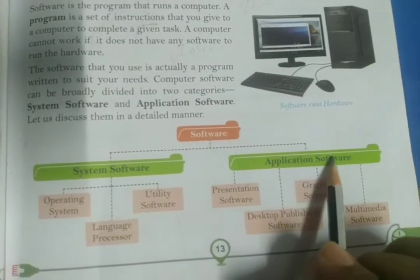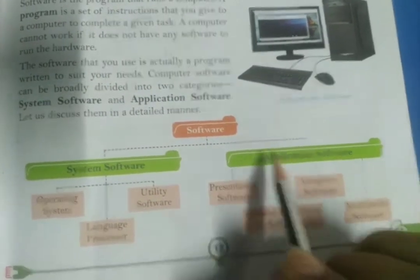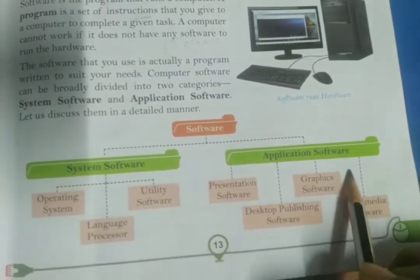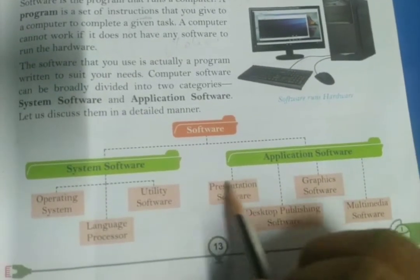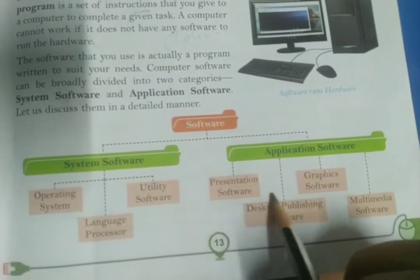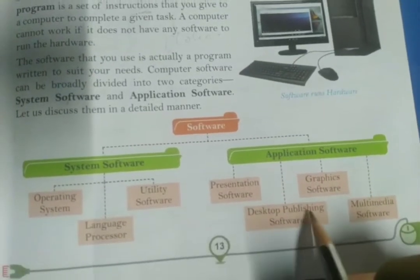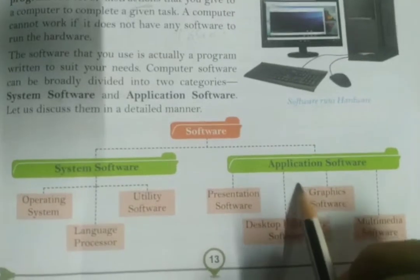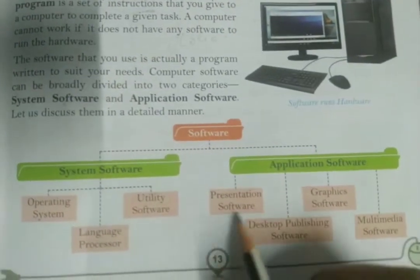Application software is mainly divided into two parts: general purpose software and specific purpose software. It can be further categorized as presentation software, graphic software, desktop publishing software, and multimedia software.